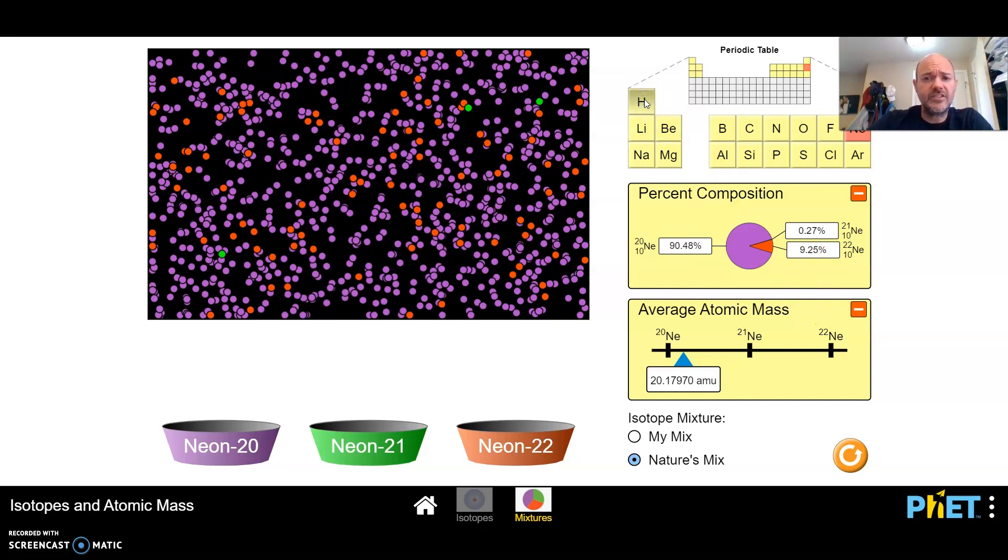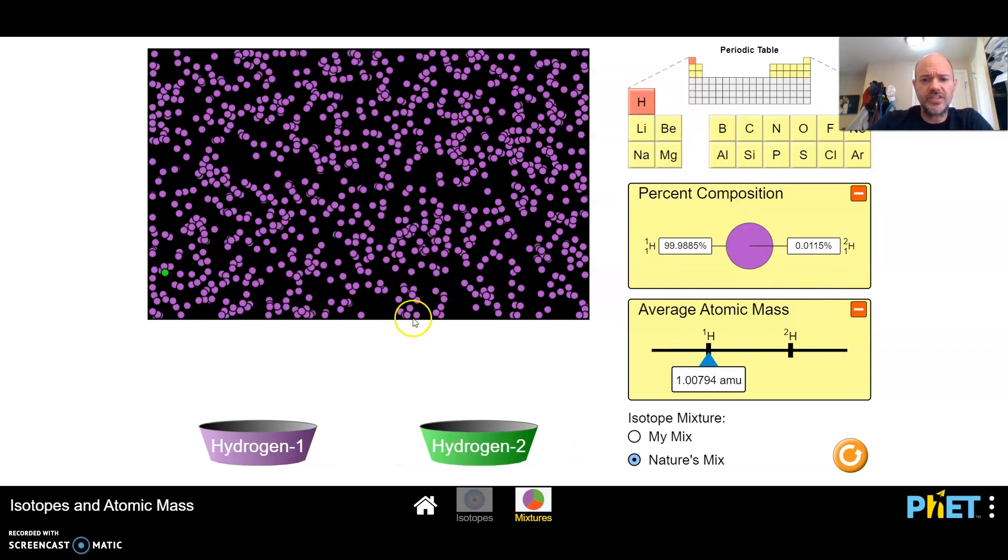If we look at hydrogen, we'll see that, oh look, hydrogen one and then hydrogen two. So only one in here, one of these atoms is going to be hydrogen two in real life. And that's why the average atomic mass is really close to one.